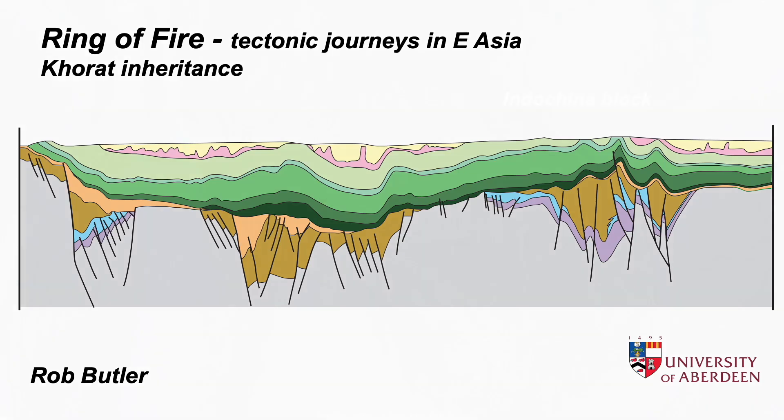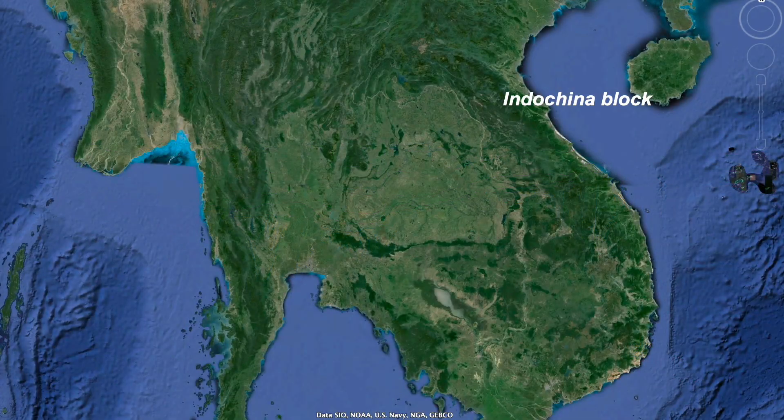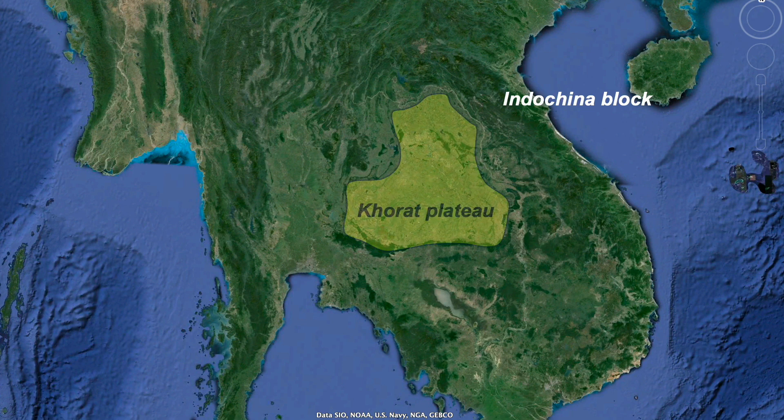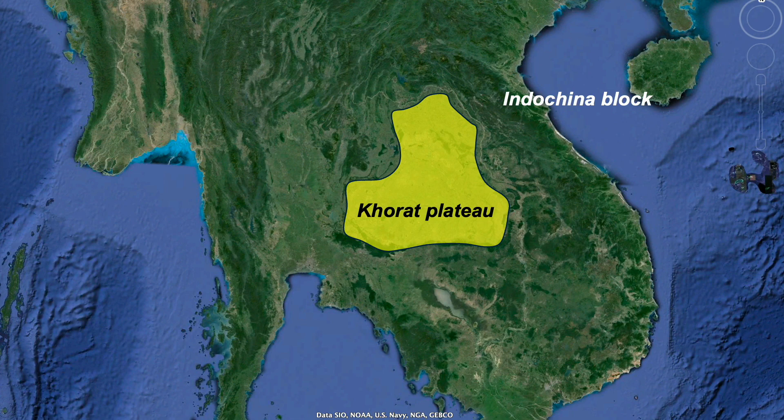There's a corner of Southeast Asia that seems almost immune to the tectonics that are impacting the region. It's Thailand's Khorat Plateau, a part of the Indochina continental block.